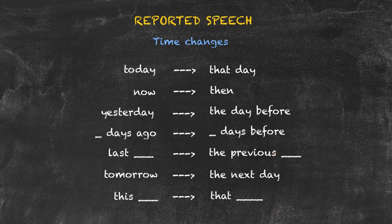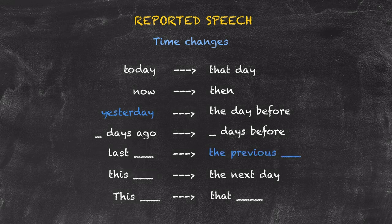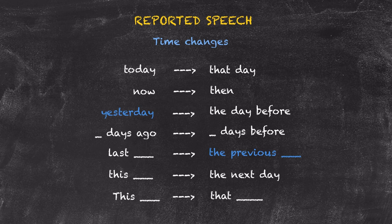Now, these changes aren't absolute. They can vary so long as the time change does indicate when something was said. So 'yesterday' doesn't need to be 'the day before' — it could be 'the previous day.' If we go back to the example with Mike and stopped smoking, we could also say that Mike said he had stopped smoking on New Year's Day, because we remember the specific date on which it was said.